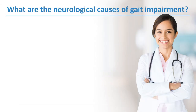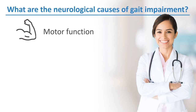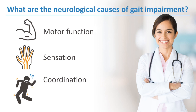What are the different causes of gait impairment? Most neurological causes of gait difficulty are related to deficits in motor function, sensation, coordination, or a combination of these functions. Coordination problems can be further divided into pathology affecting the vestibular, cerebellar, or extrapyramidal systems.